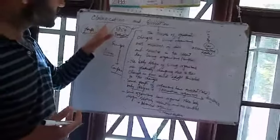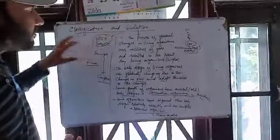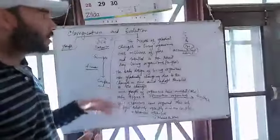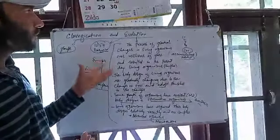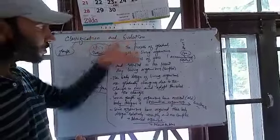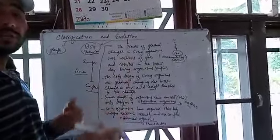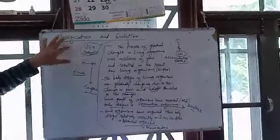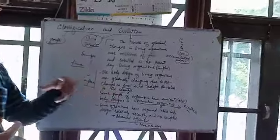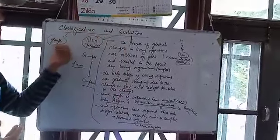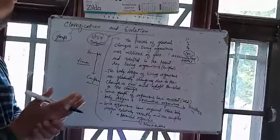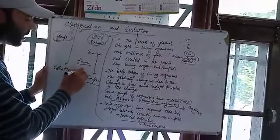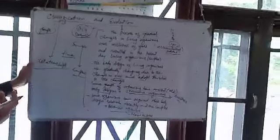Without considering the concept of evolution, the classification is not complete. Scientists in modern times have related the process of evolution with the classification of organisms so that classification becomes more and more valid. The relation between organisms is understood through evolutionary processes. Therefore, classification and evolution have a very important relation — without evolution, we cannot classify organisms into different groups with true relationships.